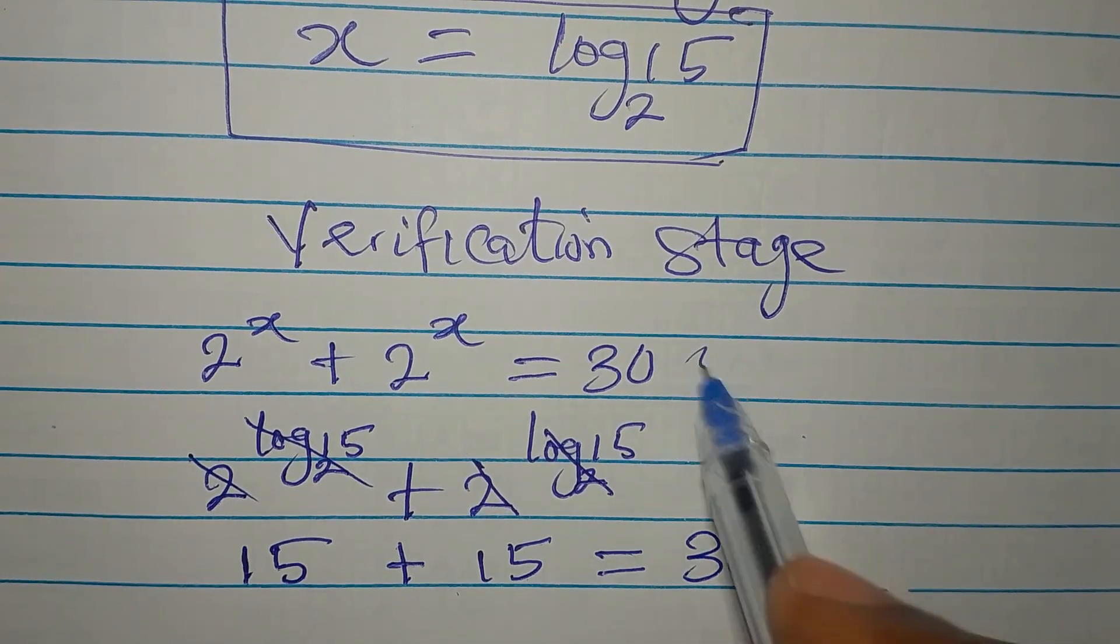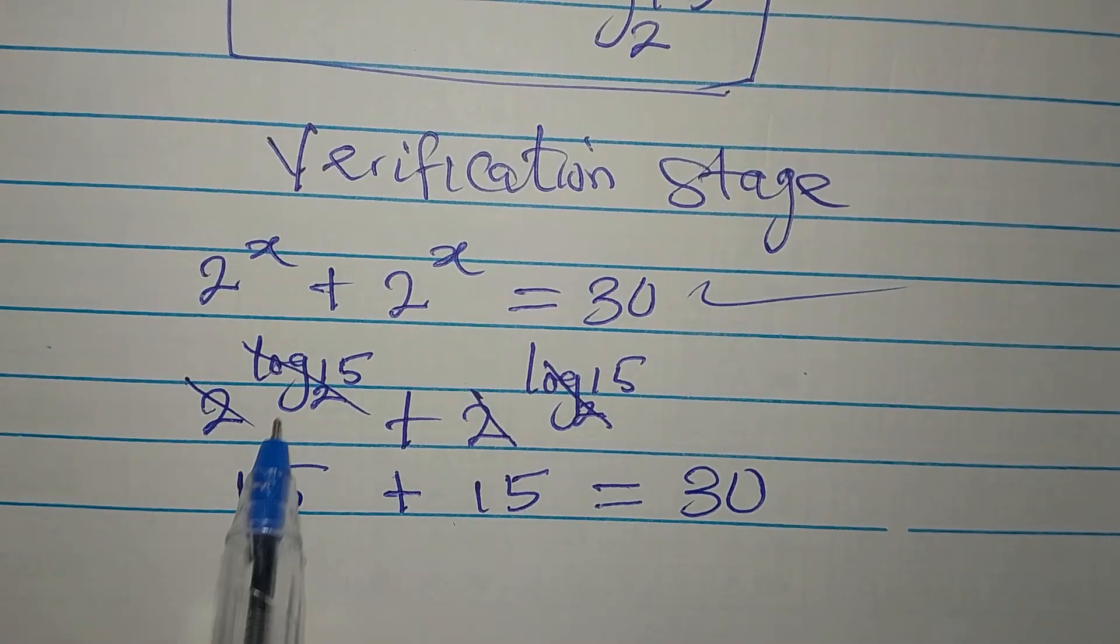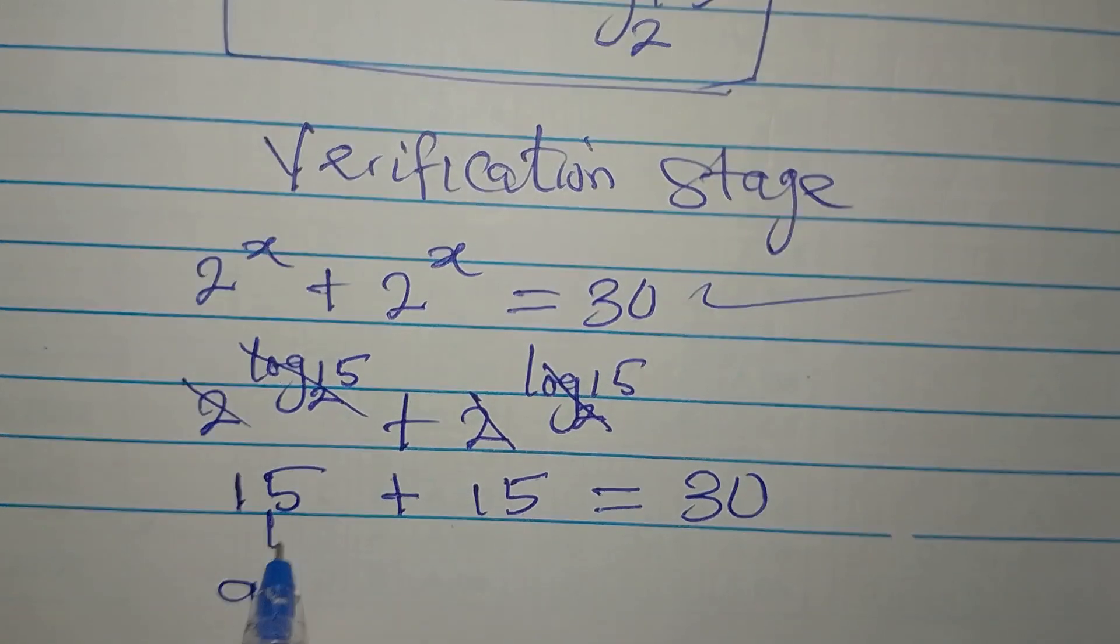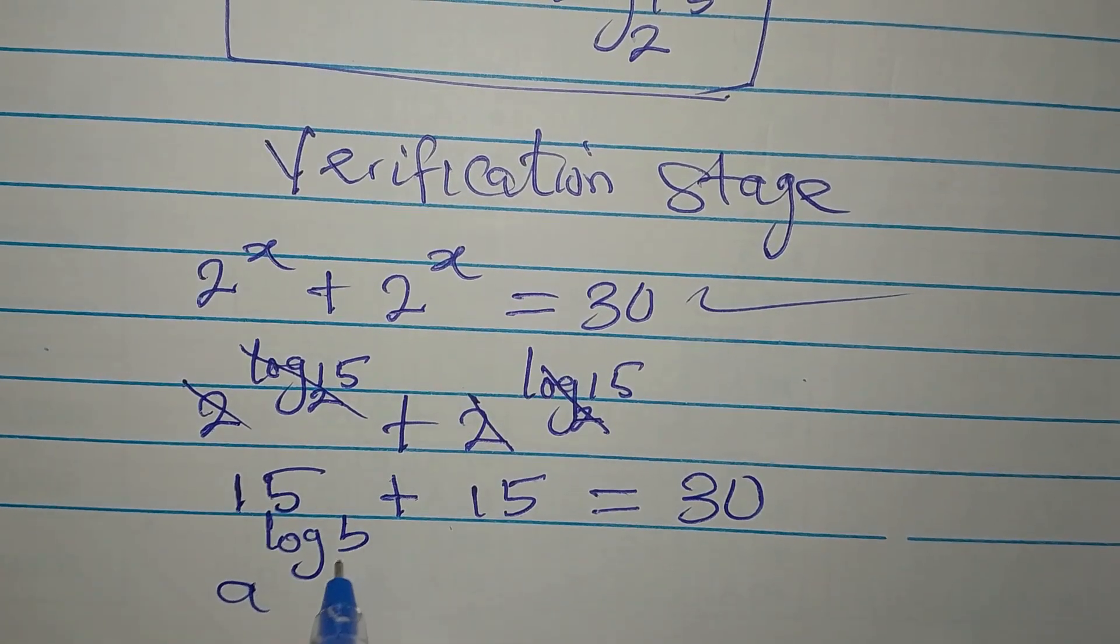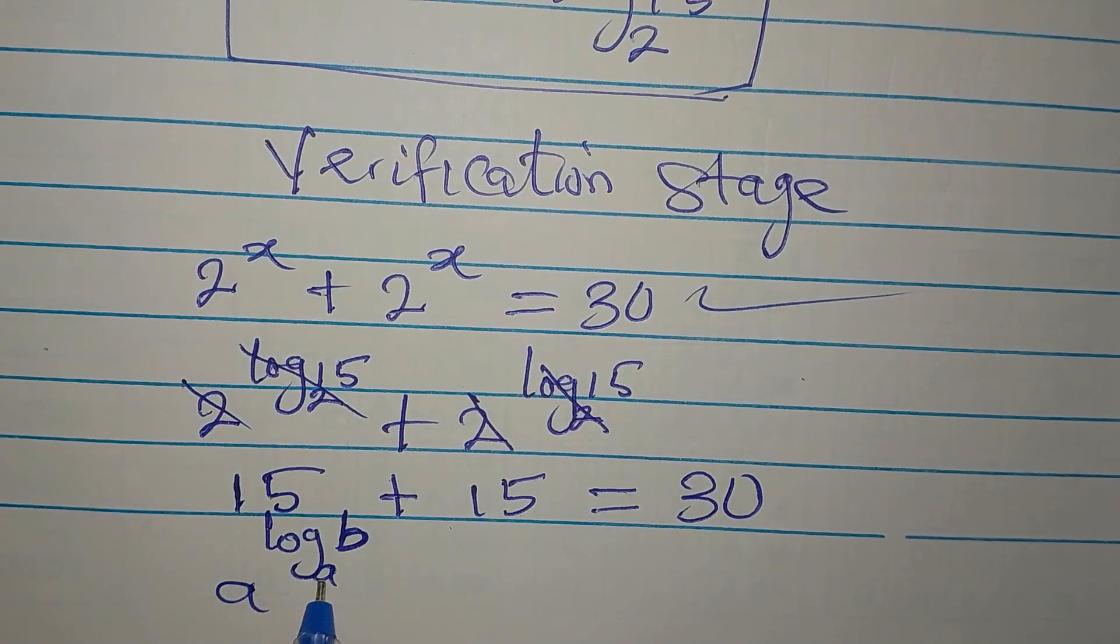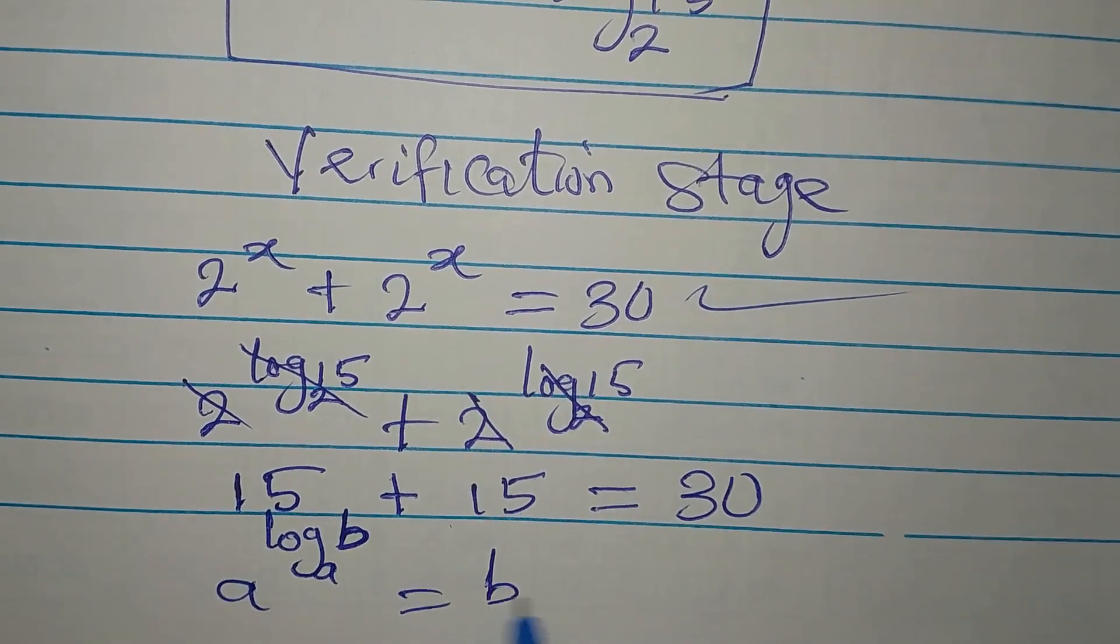And that is what we have on the right-hand side of the equation. And what I just did here is this. Imagine you have a to the power of log b, log b to base a. If this and this are the same, then b right here is what you have.